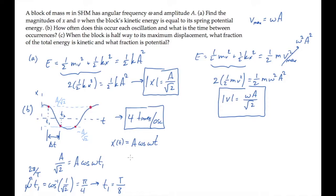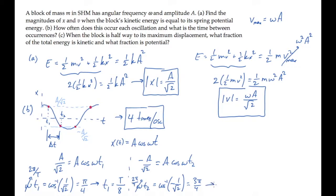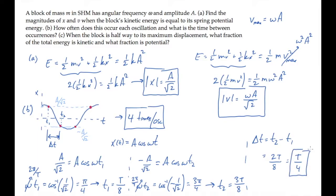We do the same thing now for the position equal to minus A over root 2. The inverse cosine of minus 1 over root 2 is 3 pi over 4. And again, replacing omega with 2 pi over the period, we find that t2 equals 3 times the period over 8. Delta t is just the difference between these two, and that works out to one quarter of the period. We know from symmetry and the cosine function that all the other time differences between occurrences will be the same.